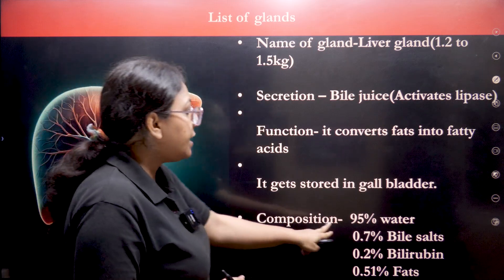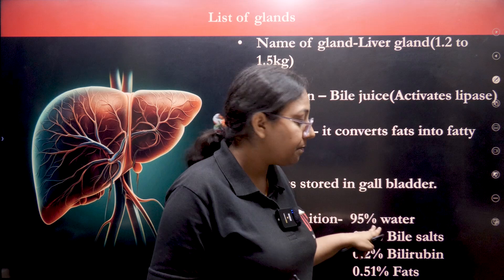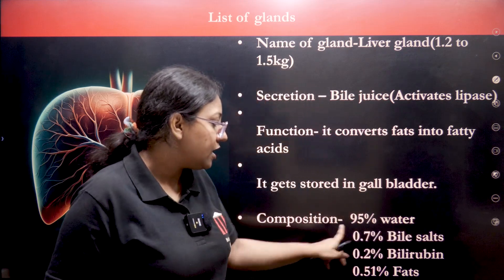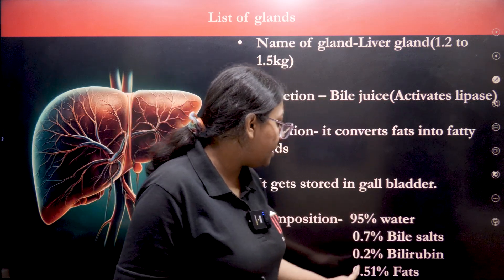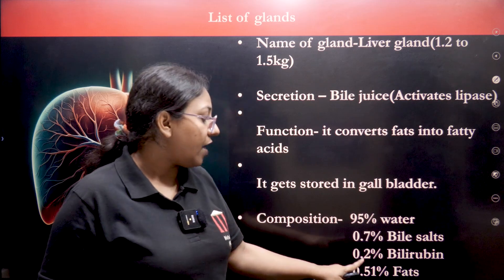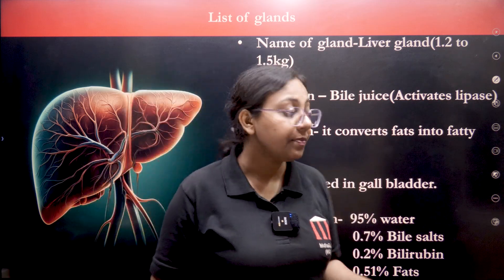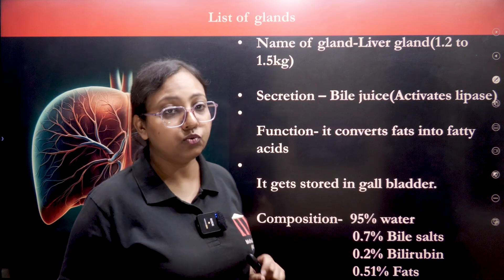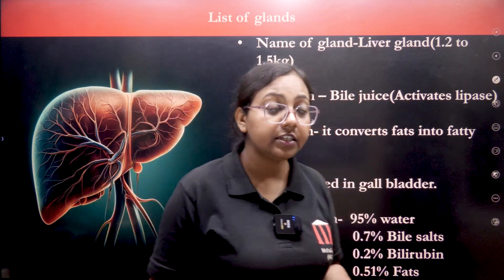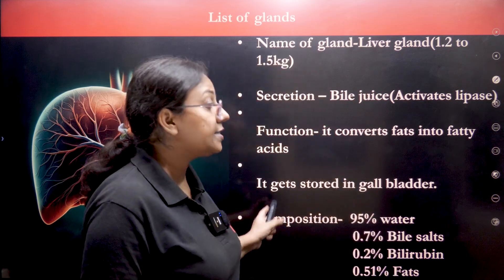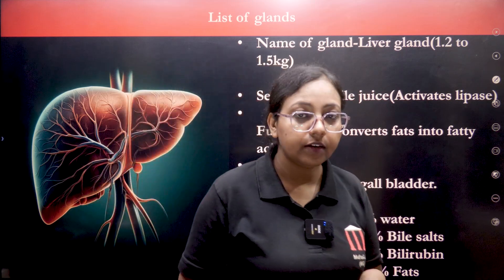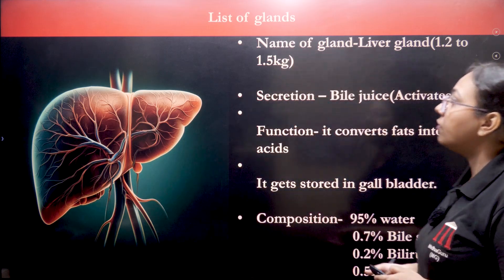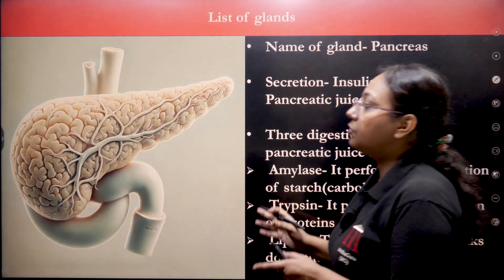Now let's understand the composition of bile juice: it has 95% water, 0.7% bile salts, 0.2% bilirubin, and 0.51% fats. This is the whole composition of bile juice — it is important to note this down so you can move forward easily.